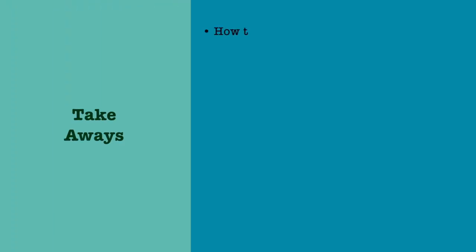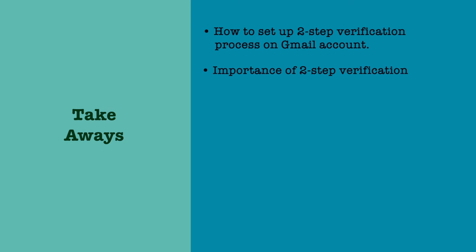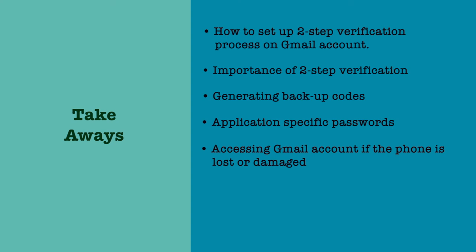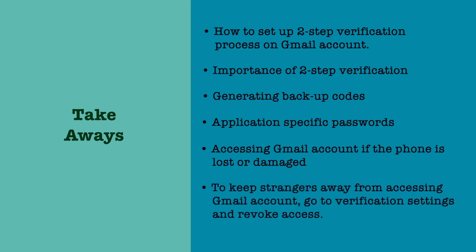With this, we have learned how to set up two-step verification for Google accounts, the importance of having it enabled, how to generate backup codes when you don't have access to your phone, and how to use application-specific passwords for apps that don't support verification codes. We also saw how to access your Gmail account if your phone is lost or damaged, and how to revoke access from all devices and apps via your verification settings page. Happy browsing — please enable your two-factor authentication. Thank you.